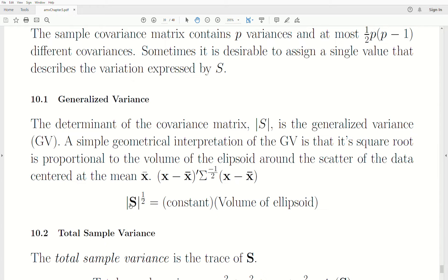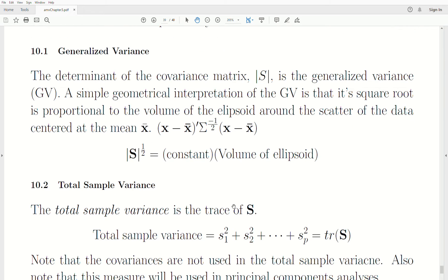So that creates these ellipses around our data. The square root of the determinant of S is a constant times the volume of that ellipsoid. So, the bigger the generalized variance, the more spread out the data is. You can think of it as we just need a bigger and bigger ellipsoid to surround the data, and that's the generalized variance.